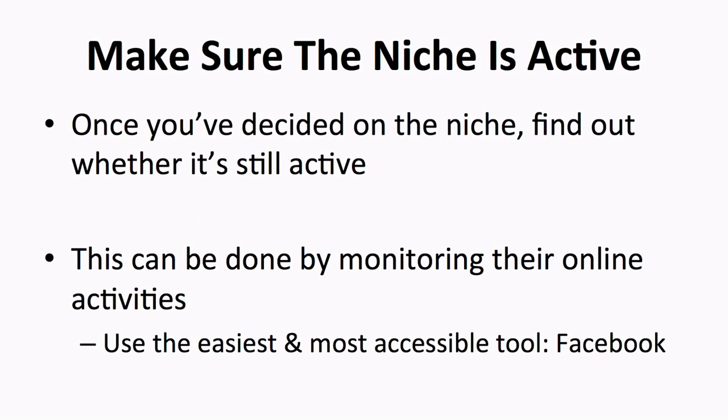Now that you've gotten an idea of which niche and types of content you want to choose, you have to make sure that the niche is active. To find an active niche, you would need to monitor their online activities. There's an easy way to do this, which is through the most accessible social media platform there is — Facebook. On Facebook, you can just do a quick search for the groups in your niche, for example, affiliates program. Then Facebook will show you the search results, probably by the dozens or, if you're lucky, by the hundreds. If there are still activities in the group, especially online, that means the niche is definitely viable.